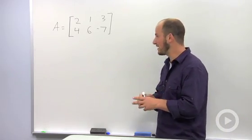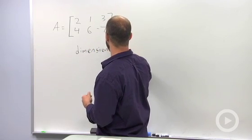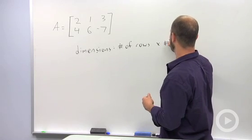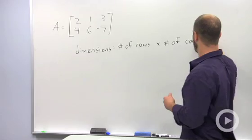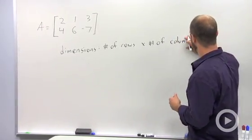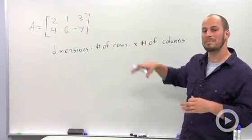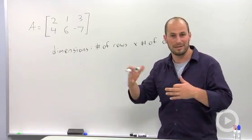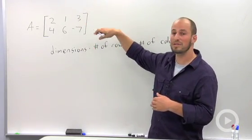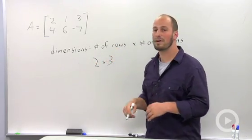The first thing we need to talk about is the dimensions of a matrix. The dimensions are basically the number of rows by the number of columns. Looking at our matrix, remember columns go up and down - think about Greece and all the ancient architecture, columns are up and down. Rows go side to side. So we have two rows and we have three columns in this instance.